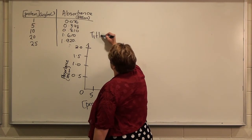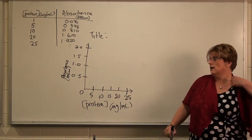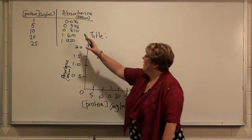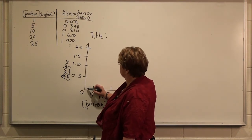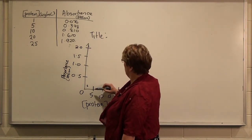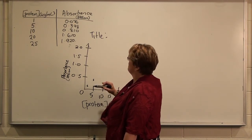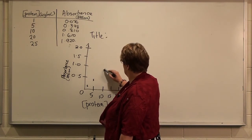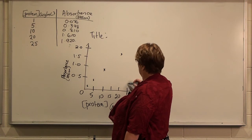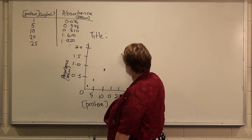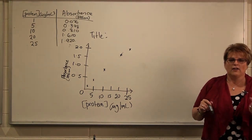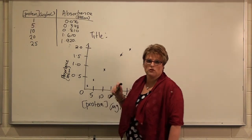A graph needs a title — in this case, 'Standard curve for determination of unknown protein concentrations.' Then we plot our data: at 1 microgram per ml the absorbance is just under 0.1, at 5 it's about 0.3, at 10 about here, at 20 around 1.6, and at 25 about 1.92. Data points should be nice and clear. In these sorts of experiments, you may even do duplicate readings and plot duplicate points.